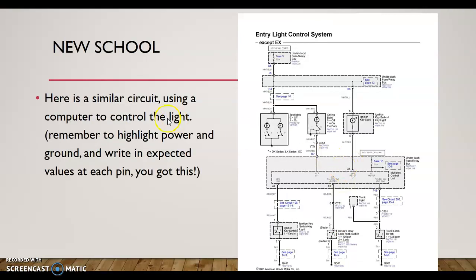Here's the thing about the new school — you diagnose it the same. Nothing's changed. The computer becomes the switch; those transistors are my switches. In this circuit, I have 'hot at all times,' so this fuse gets power all the time. 12 volts comes out and goes to these spotlights. These are going to work like the other component — here I have off and on. If it's on, it's component-grounded right here. If it's off, that's it. 12 volts comes over to the ceiling light, and much like the previous schematic, I have three positions: off, on, and door.